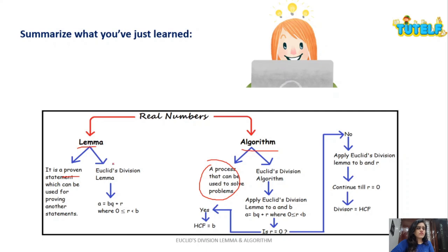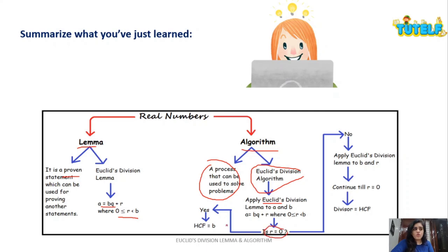Euclid's division lemma states a = bq + r, similar to dividend = divisor × quotient + remainder, where r ≥ 0 but r < b. For Euclid's division algorithm: apply the lemma to a and b. Check if r = 0. If yes, HCF(a, b) = b. If no, apply the division lemma to b and r (b becomes new dividend, r becomes new divisor). Continue until r = 0. The last divisor gives the HCF.